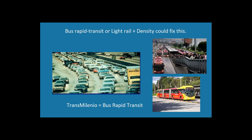To refresh your memory, we talked before about bus rapid transit — the Trans Milenio in Bogotá, Colombia. The buses get the middle lane and are able to carry a lot of people. Once you have density, this kind of public transportation becomes a lot more doable.